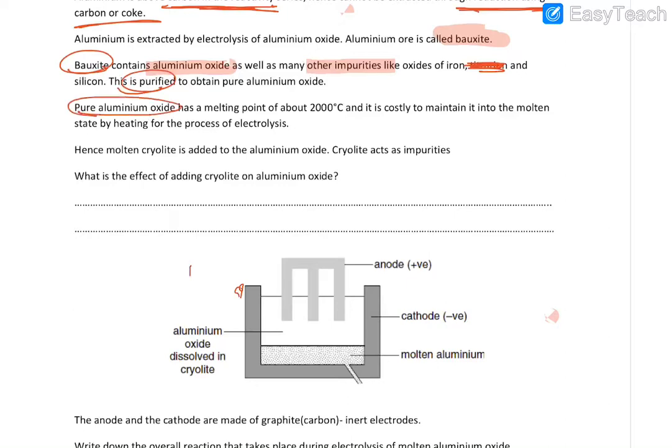The pure aluminum oxide has a melting point above 2000 degrees Celsius. So it's a very high melting point temperature. And in order to keep it in the molten state, we're going to add cryolite to it.